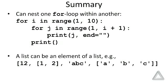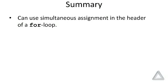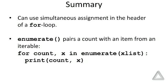Here's an example where we have a list that has an integer value, a list of integer values, then a string, and then a list of strings. We then went on to discuss simultaneous assignment in the header of a for loop, and as part of that,